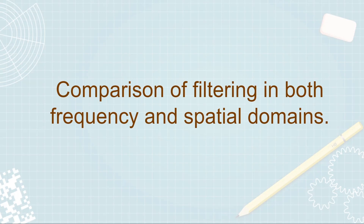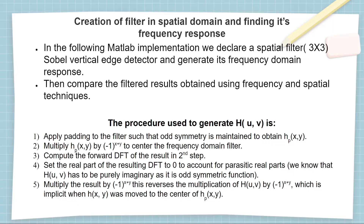Coming back to the main topic of the video, in this MATLAB simulation we compare the outputs of two images generated by frequency domain and spatial domain filtering. Initially we declare a 3×3 Sobel vertical edge detector, which is a special type of filter that detects sharp edges or high frequency components of the image. Then we generate its frequency domain response and apply it over the image to be filtered, and compare the results of spatial domain filtering and frequency domain filtering.